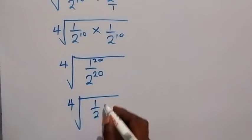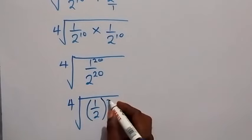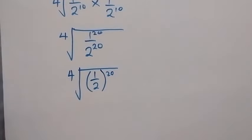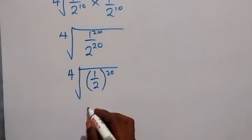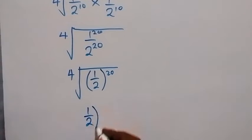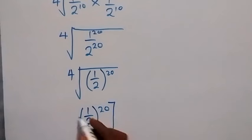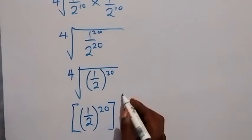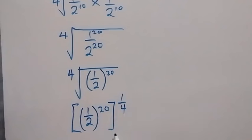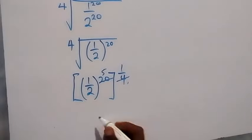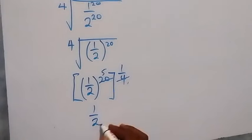From here, using the law of indices, this fourth root can be written as 1 over 2 raised to power 20, then raised to power 1 over 4. We multiply the powers: 20 times 1 over 4 — the 4 cancels into 20 — giving us 5. So what we have left now is 1 over 2 raised to power 5.